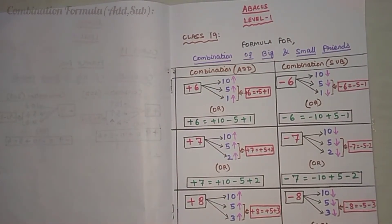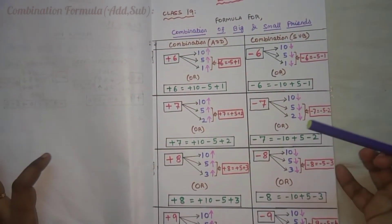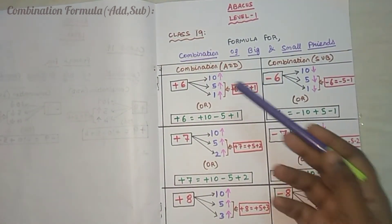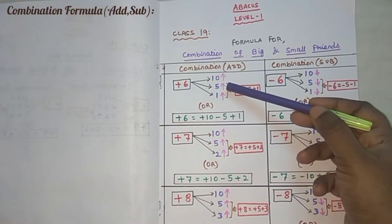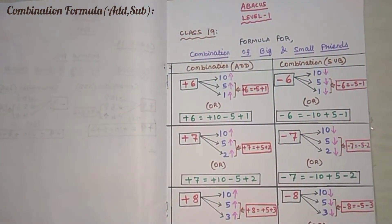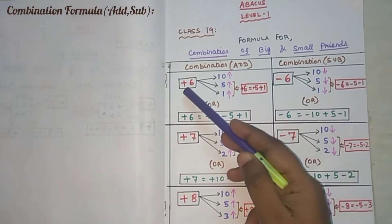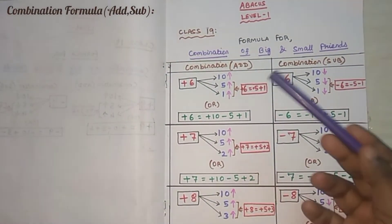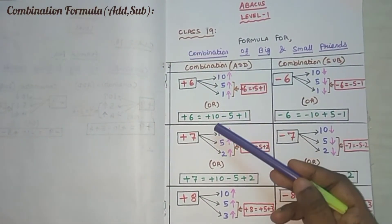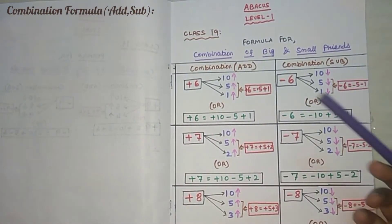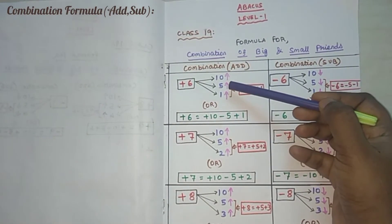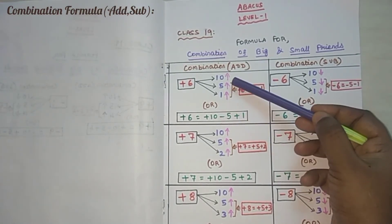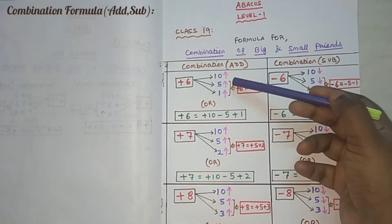Now we'll see how to apply combination formulas. Only 4 numbers have combination formulas: 6, 7, 8, and 9. First we'll see the plus 6 formula. Combination plus means move the beads in the upward direction — move 10 and 5 upward by default in all formulas: 10 upward, 5 upward. Since 5 + 1 = 6, move that one bead in the upward direction. So: 10 up means plus 10, 5 up means minus 5, and 1 up means plus 1.